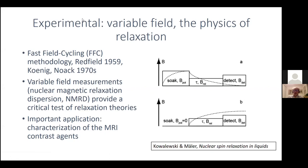If you want to understand the physics of relaxation, the experiment par excellence does not use temperature as a variable but instead uses the magnetic field. In this audience I don't need to describe the fast field cycling methodology, developed in the late 1950s by Redfield, Koenig, Noack, and others. What I'm interested in is that this type of measurement provides critical tests of relaxation theories, and an important application I'm interested in is the characterization of MRI contrast agents.